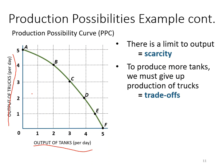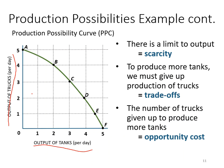The third information to find from the production possibility curve is opportunity cost — the number of trucks given up to produce more tanks. For instance, if you try to produce two more tanks from zero to two, your opportunity cost is one truck. So sacrificing one truck allows you to produce two more tanks. The one truck is your opportunity cost for producing two more tanks.